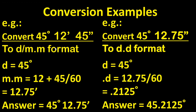Let's start by converting 45 degrees, 12 minutes, 45 seconds to the degree-decimal minute format. The degree remains the same at 45 degrees. For the decimal minute, the minute part remains the same at 12, but the decimal part of the minute is the seconds divided by 60, giving 12.75. So the answer is 45 degrees, 12.75 minutes. Now let's convert 45 degrees, 12.75 minutes to decimal degree format. The degree remains the same at 45 degrees. The decimal degree is simply calculated by dividing 12.75 by 60, which is 0.2125, giving the answer 45.2125 degrees.